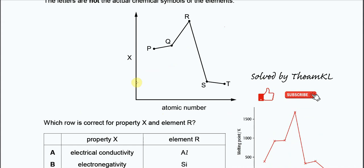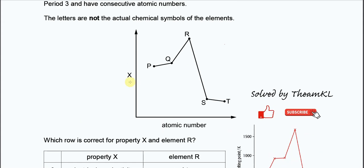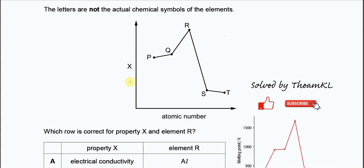This is quite obvious that it's electrical conductivity. Which means P is sodium, Q is magnesium, R is aluminum, S is silicon, and T is phosphorus.